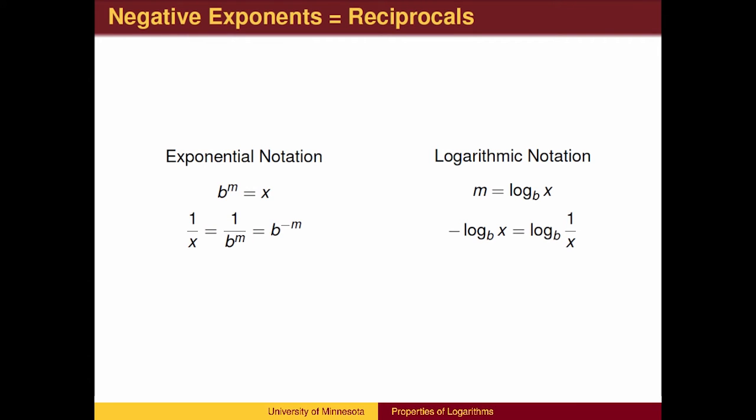What is the log base b of 1 over x? Using the definition x is b to the m, so 1 over x is 1 over b to the m. And we know that reciprocals are represented by negative exponents. Therefore, the exponent you put on b to get 1 over x is negative m, which is the opposite of the exponent you put on b to get x.